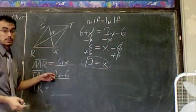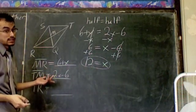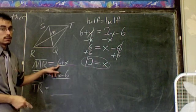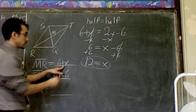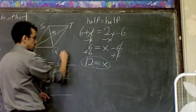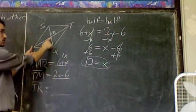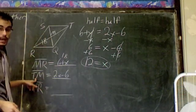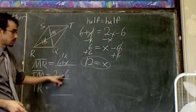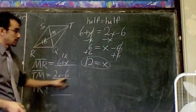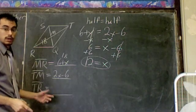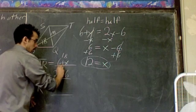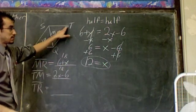Remember, we said these are both halves. So I have a pretty good idea that they should be equal. Let's see if that actually works. Well, 6 plus X and X is 12. So 6 plus 12, that means that MR is 18. This piece right here is 18 inches or feet or units long. TM is 2 times X minus 6. Well, 2 times X or 2 times 12, 2 times 12 is 24. 24 minus 6 is 18. So TM is also 18. This piece here is 18.